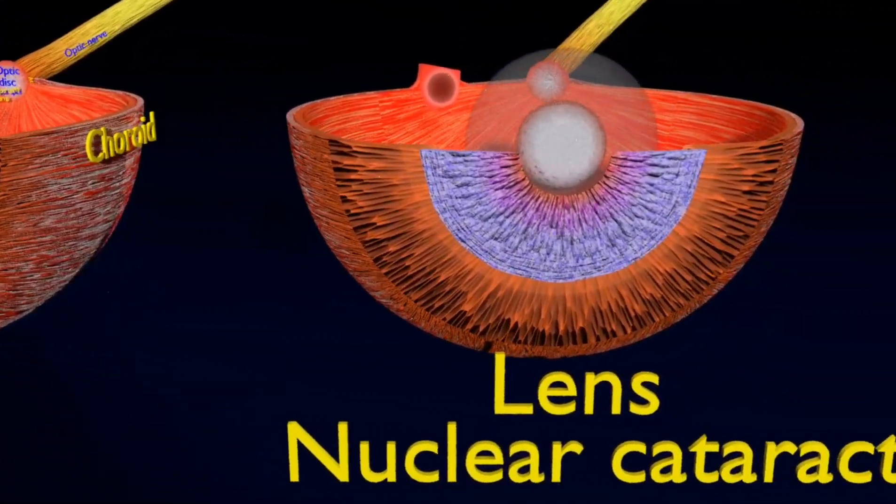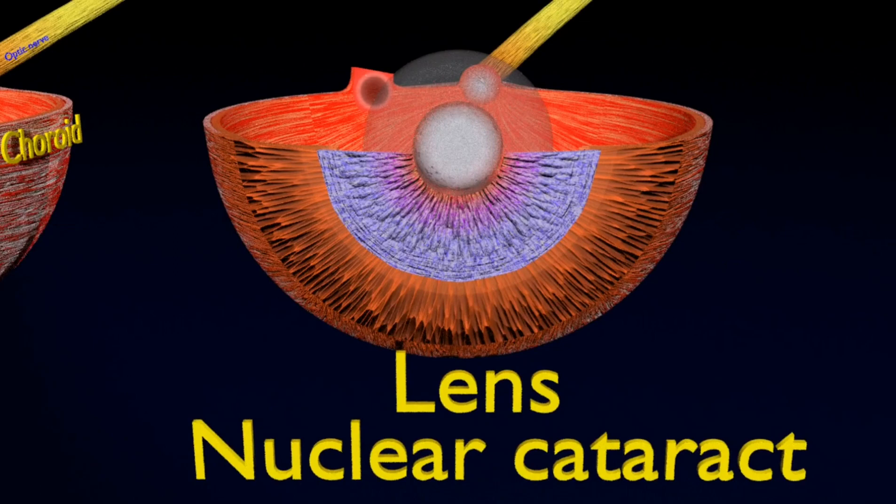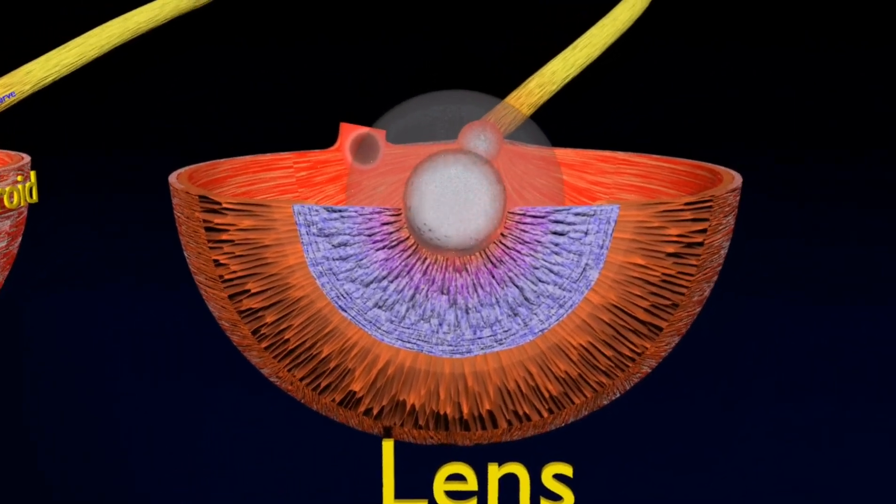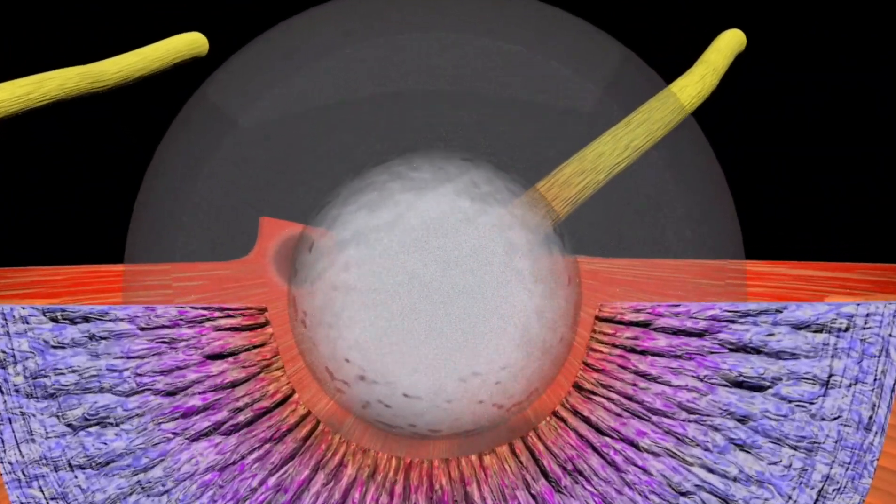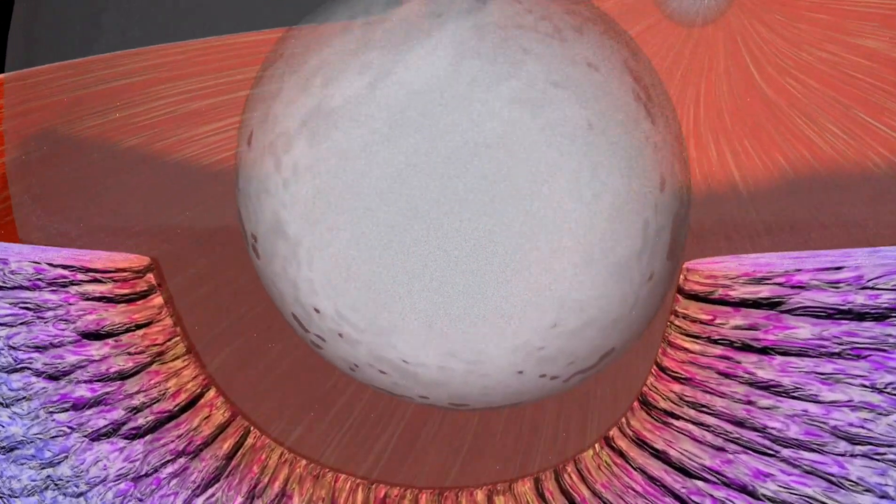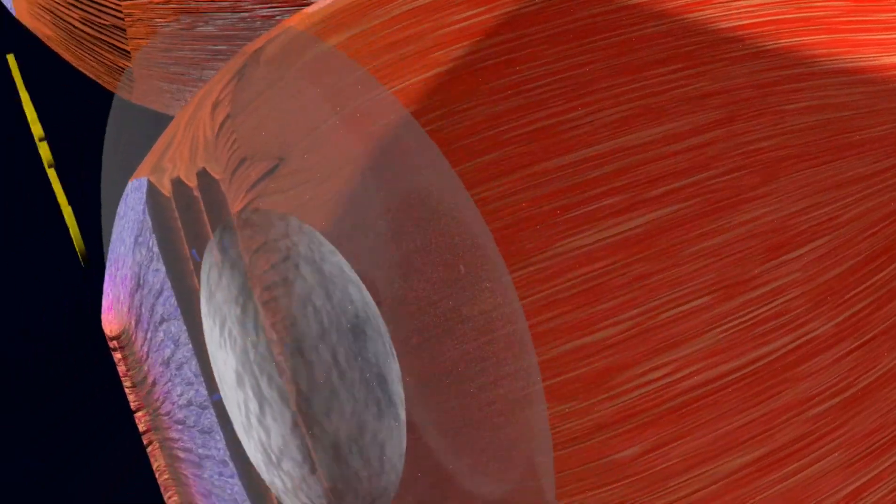Nuclear sclerosis is the most common type of cataract and involves the central or nuclear part of the lens. This eventually becomes hard or sclerotic due to condensation on the lens nucleus and the deposition of brown pigment within the lens.